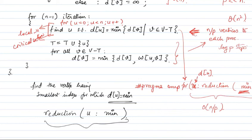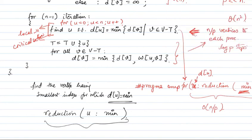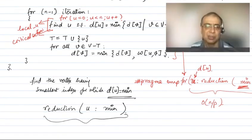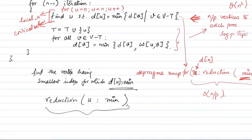A student asks whether OpenMP reduction works for non-primitive variable types like pairs. That's worth checking. If OpenMP supports reduction on custom data structures, you could do it in one step — though it's worth comparing performance against two separate reductions. If reduction on custom types is not supported, the two-step approach is the way to go: first reduce the min value, then reduce the vertex index.